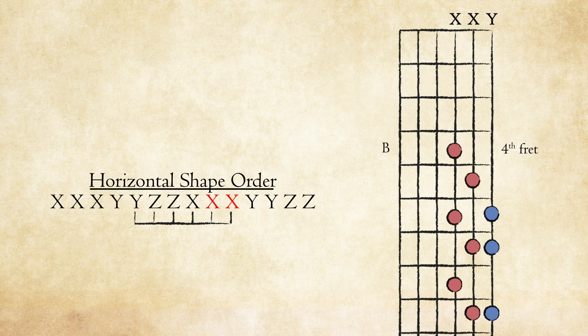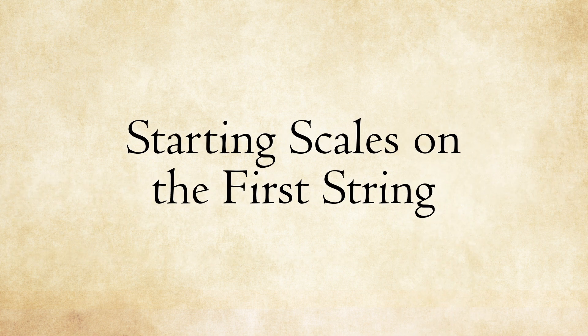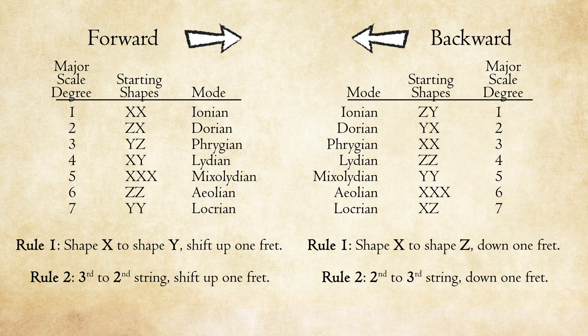Two X's are preceded by another X. Play that shape. Next, play shape Z, but shifting down a fret because we're moving from X to Z. Now play the 2nd shape Z. Using the existing order of shapes and the two reverse rules, you can build scales backwards from the 1st string down to the 6th.